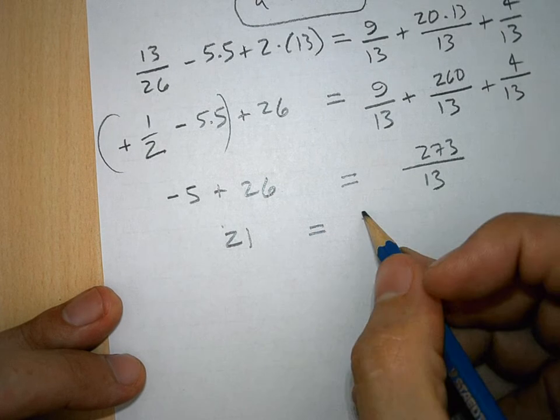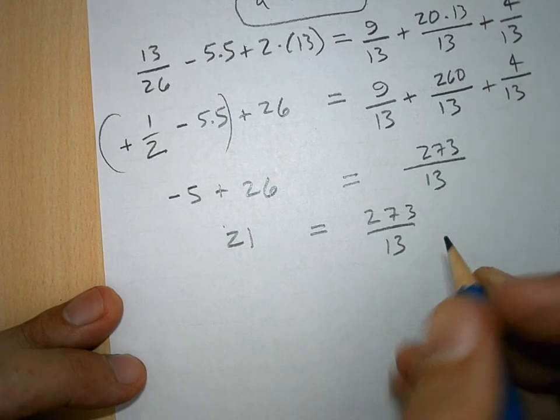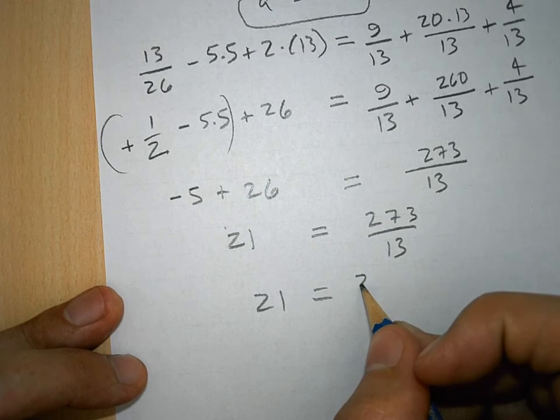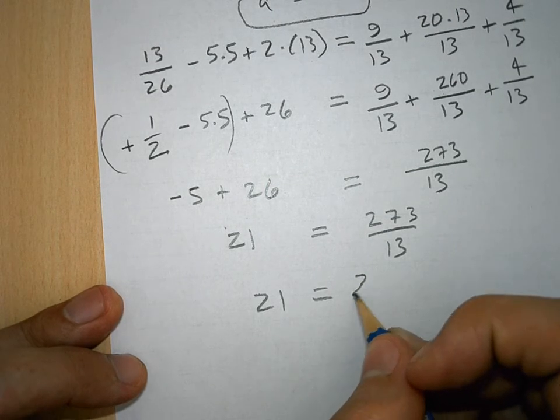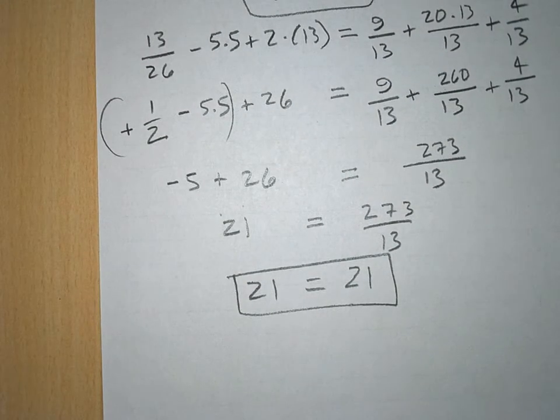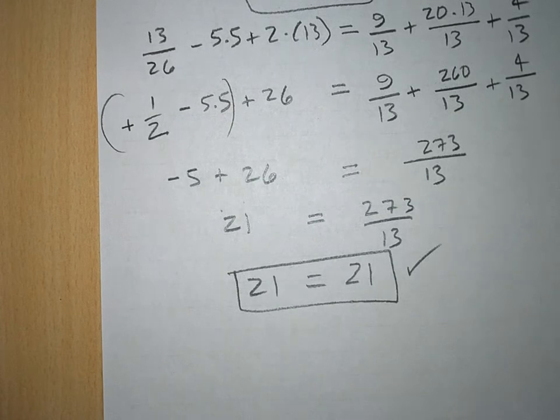And this over here is 273 divided by 13. And if you punch into a calculator, 273 by 13, you'll find the answer is 21. So, what's on the left side is on the same as the right side. So, that is the correct solution. Thank you.